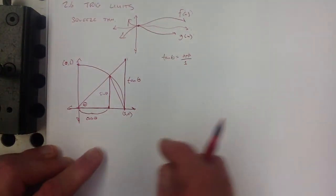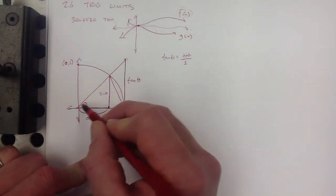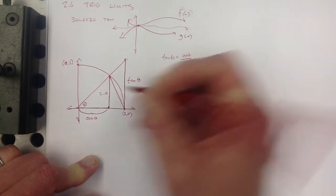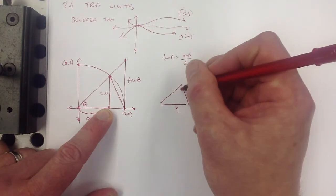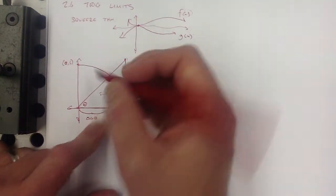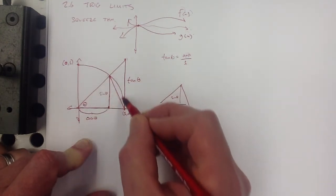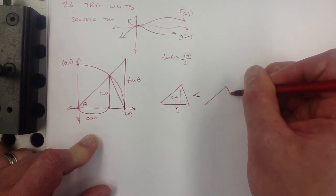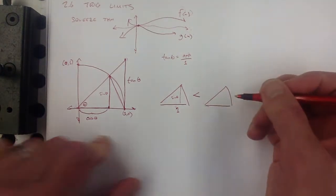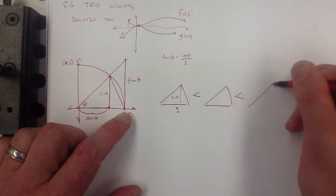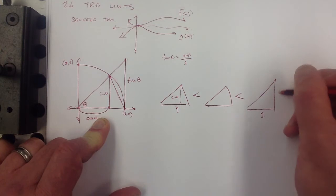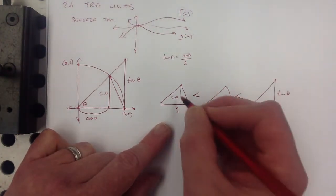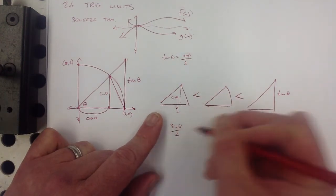I'm looking for expressions for the areas of three different figures in this diagram. First, the small triangle has a base of 1 and a height of sine theta, so its area is sine theta over 2. Clearly, just by looking at the diagram, that area is less than the area of the pizza slice sector, which is less than the big triangle with base 1 and height tangent theta, with area tangent theta over 2.